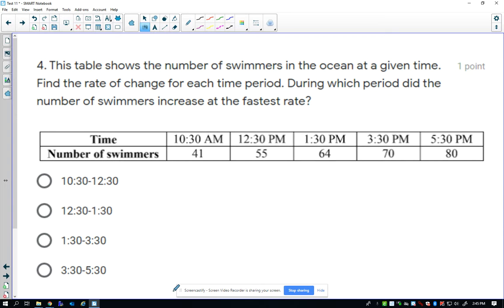This table shows the number of swimmers in the ocean at a given time. Find the rate of change.